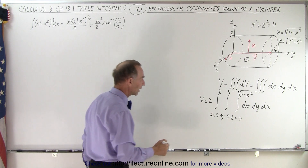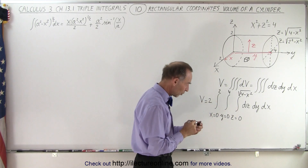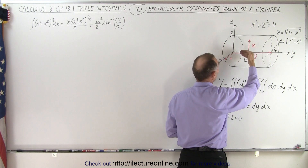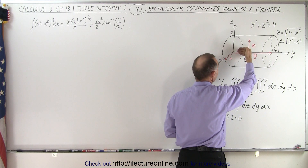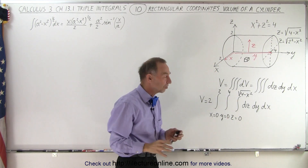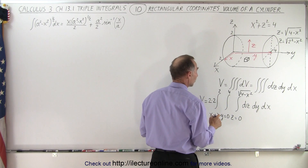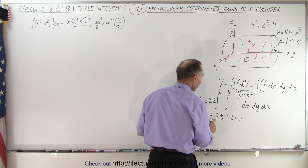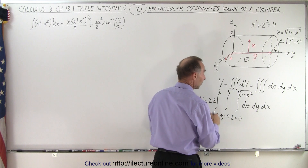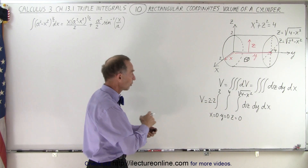Now, I almost forgot — in the y direction we went from 0 to 4, but in the x direction we only went from the center to the edge — not the other half of the cylinder. So I also have to multiply by 2. I'm integrating half the cylinder in the x direction and half in the z direction, so I must multiply by 4 because I'm only getting the volume of a quarter of the cylinder.